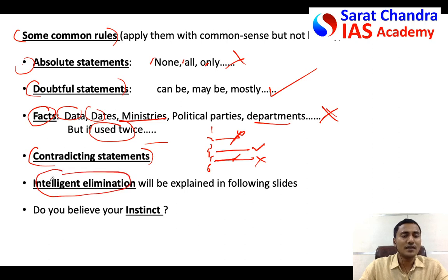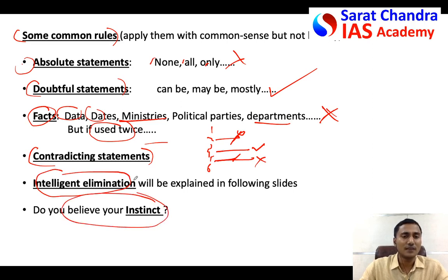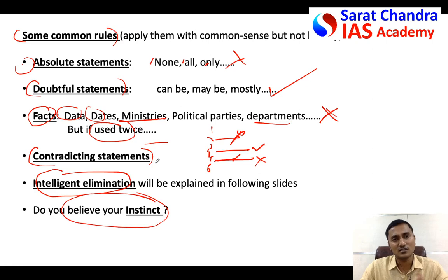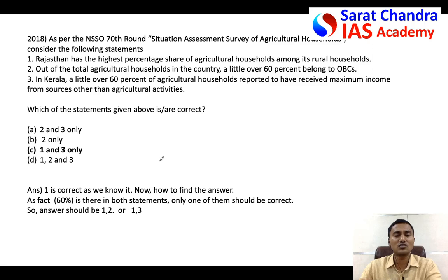I would suggest you to eliminate intelligently using your existing knowledge. If you believe in your instinct, when you read the question and look at the answer, if your instinct says option A is correct, go for it — don't think twice or thrice, because if you think a second time, you generally mark the wrong answer. That's what most experts say.